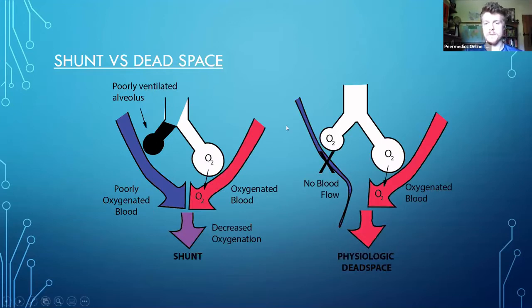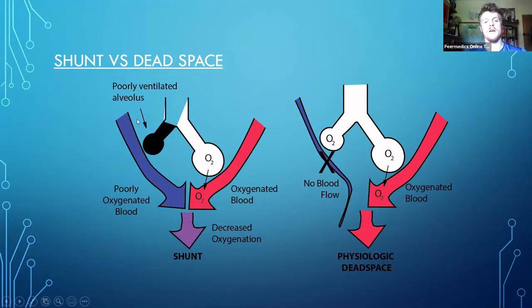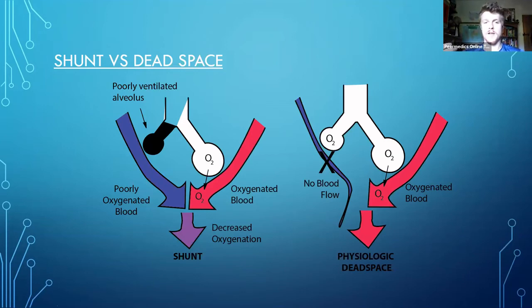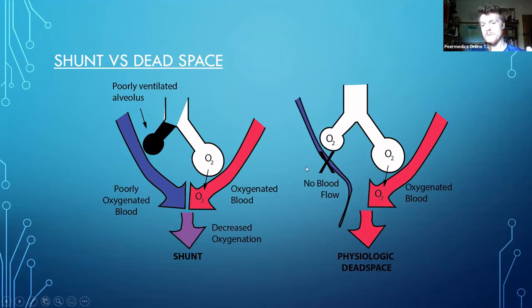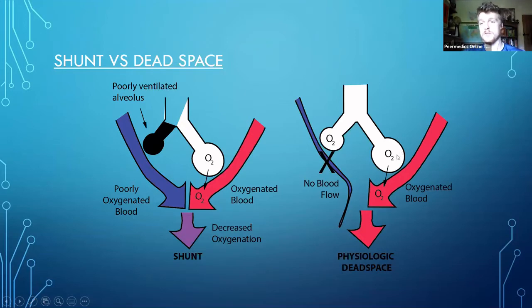This diagram illustrates the problem. On the left we have our shunt, where we have the poorly ventilated alveoli - which might be blocked with a mucus plug, for example. The blood coming around this side isn't being oxygenated. It goes back into the pulmonary veins and mixes with any blood that has been oxygenated, decreasing the overall PO2 of the blood. Physiological dead space: you effectively just remove the blood flow, so you end up being able to use way fewer alveoli, which obviously also decreases your blood oxygenation.